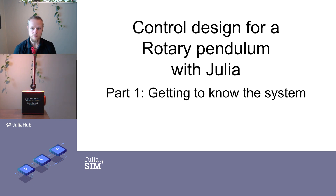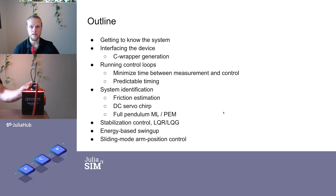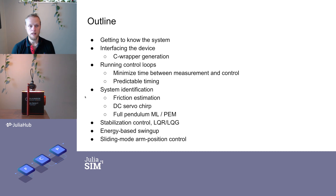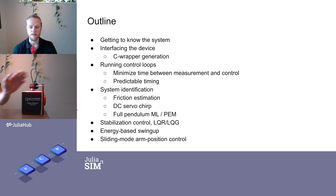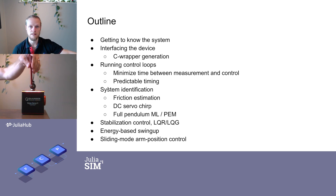I can disturb the pendulum like this. In the first video we will get to know this system, and after that we will look at how we can interface this device using the Quanser-provided C hardware-in-the-loop interface. We'll talk about how we run control loops from Julia to get predictable timing, how we can estimate some of the parameters — that's system identification — and we will look at estimating friction models and an actuator model, and then estimate all the parameters in the whole system with the pendulum. We'll go through stabilization control, which acts on the pendulum when it's in the upright position.